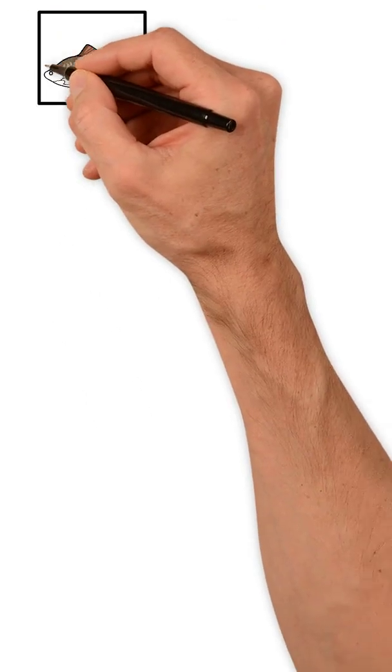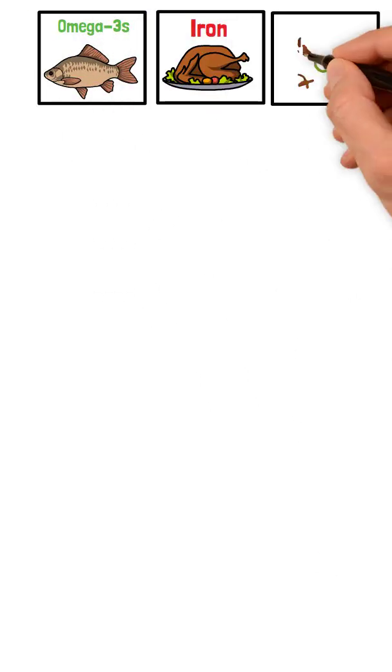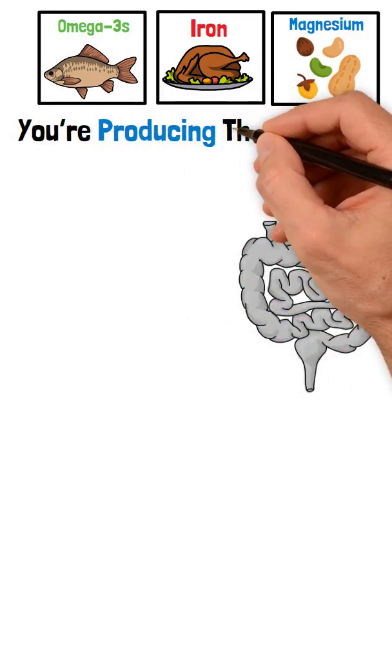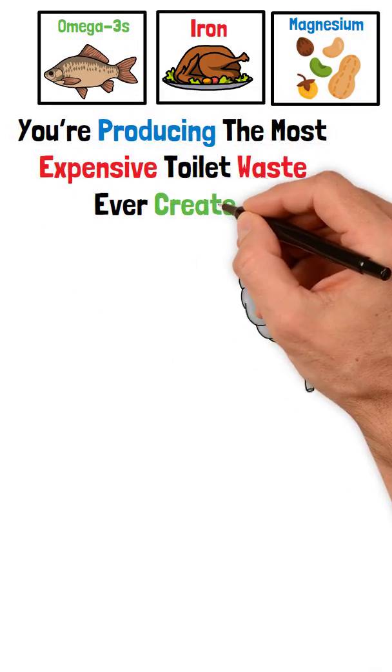You can eat salmon for omega-3s, red meat for iron, nuts for magnesium, but if your gut can't absorb them, you're producing the most expensive toilet waste ever created.